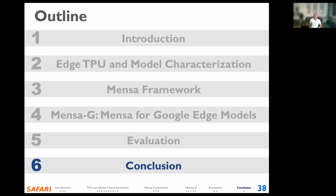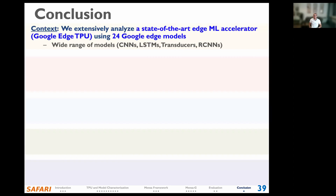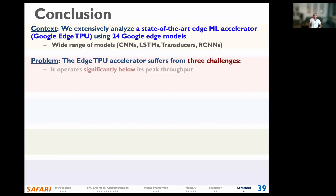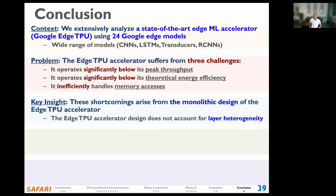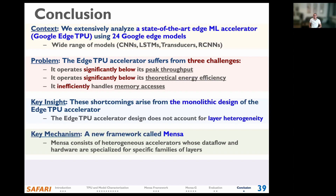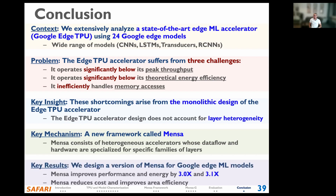In this work, we extensively analyzed 24 edge neural network models from Google by running inference on the Google Edge TPU accelerator. We identified that the accelerator suffers from three main challenges: it operates significantly below its peak throughput, below its theoretical peak energy efficiency, and its memory system is not efficient. These challenges arise due to the monolithic one-size-fits-all design of the accelerator, which does not account for heterogeneity across different neural network layers. To solve this, we propose MENSA, a framework that maps each neural network layer to its most appropriate hardware accelerator, improving performance and energy efficiency by 3x and 3.1x compared to the baseline Edge TPU across 24 edge machine learning models. Thanks for listening.